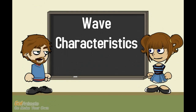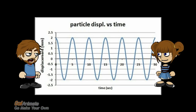Now let's look at different ways we can describe waves. All of the wave characteristics will apply to both types of mechanical waves. This graph shows the motion of a single particle as it moves. The vertical axis shows the displacement of the particle and the horizontal axis shows time. The graph shows six waves, or six cycles, of particle motion.